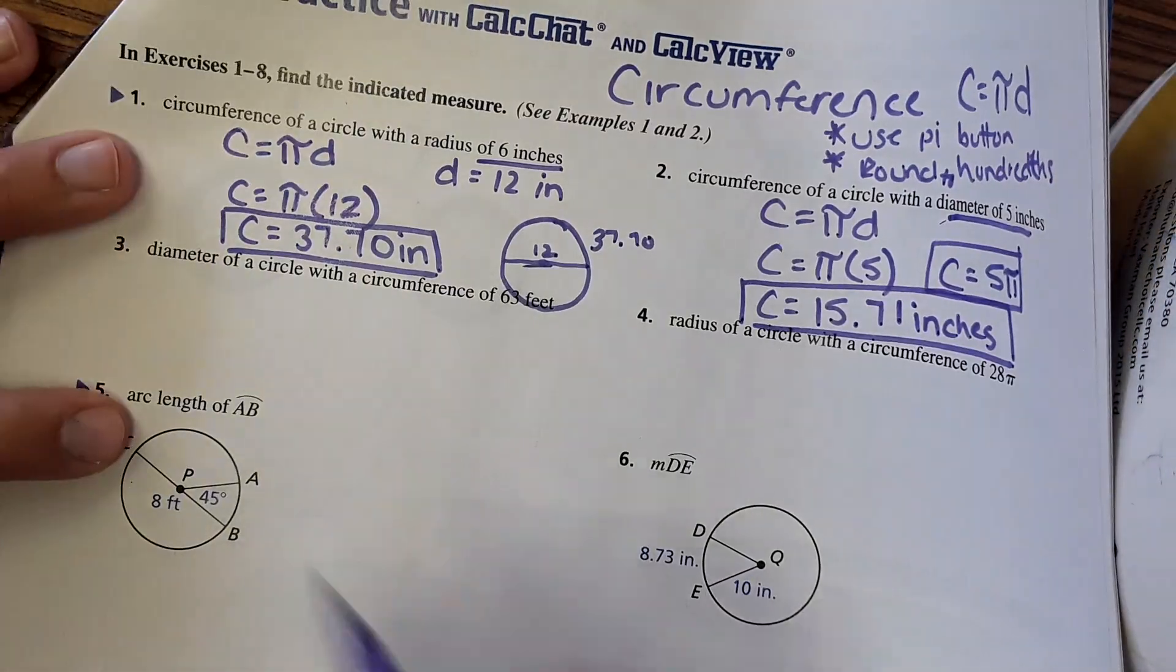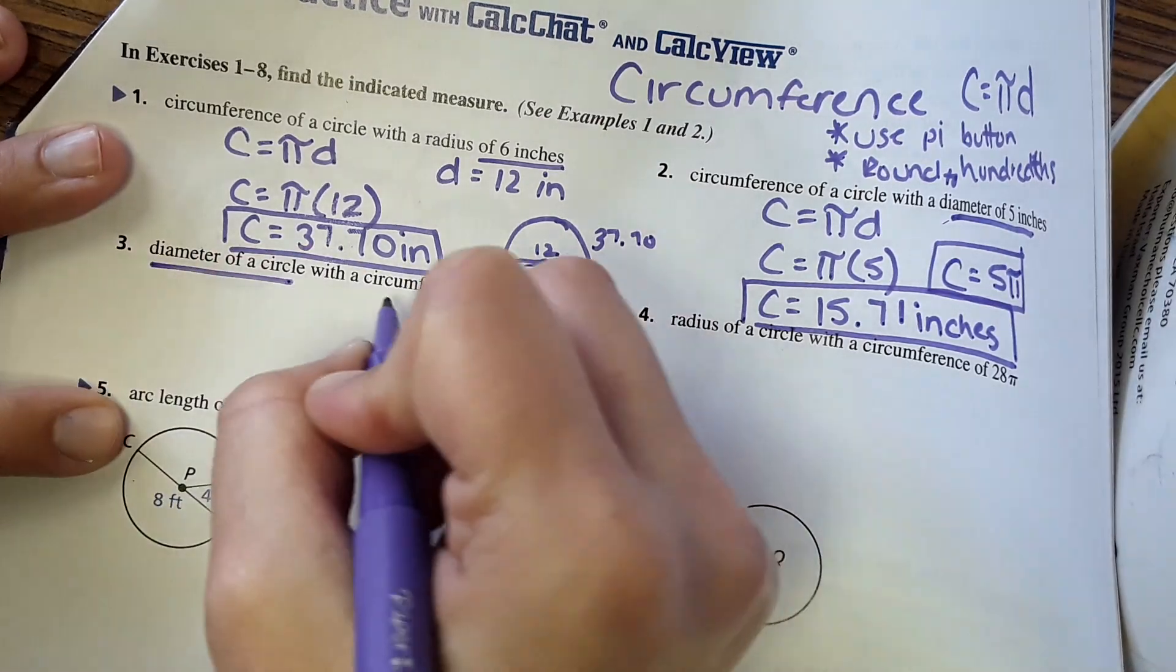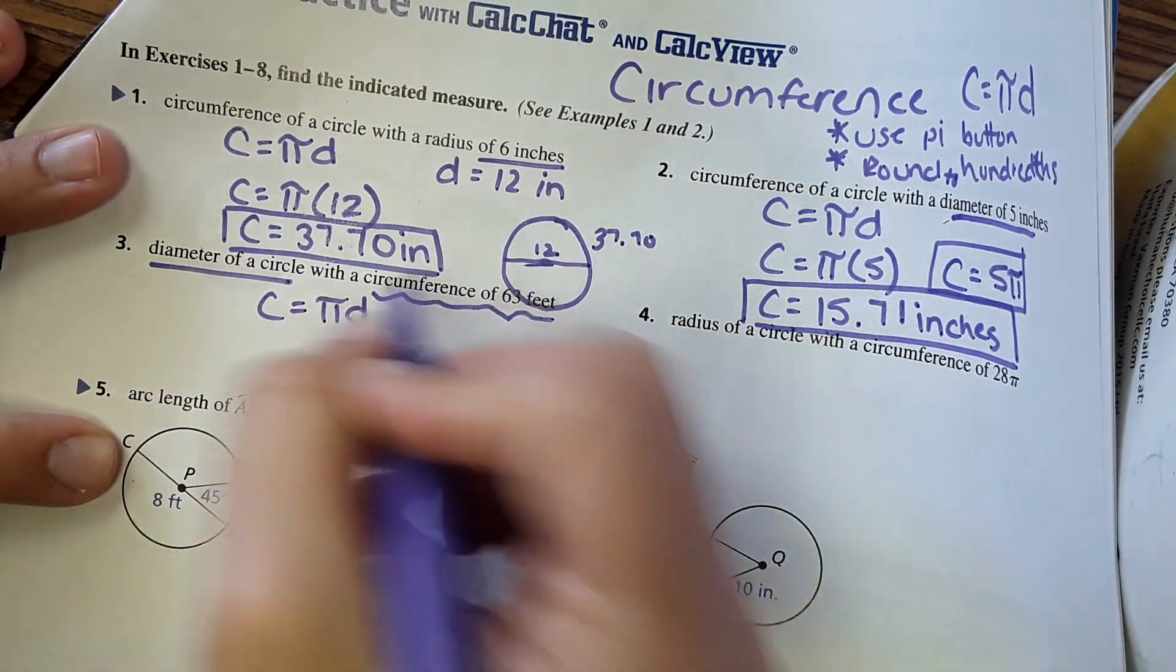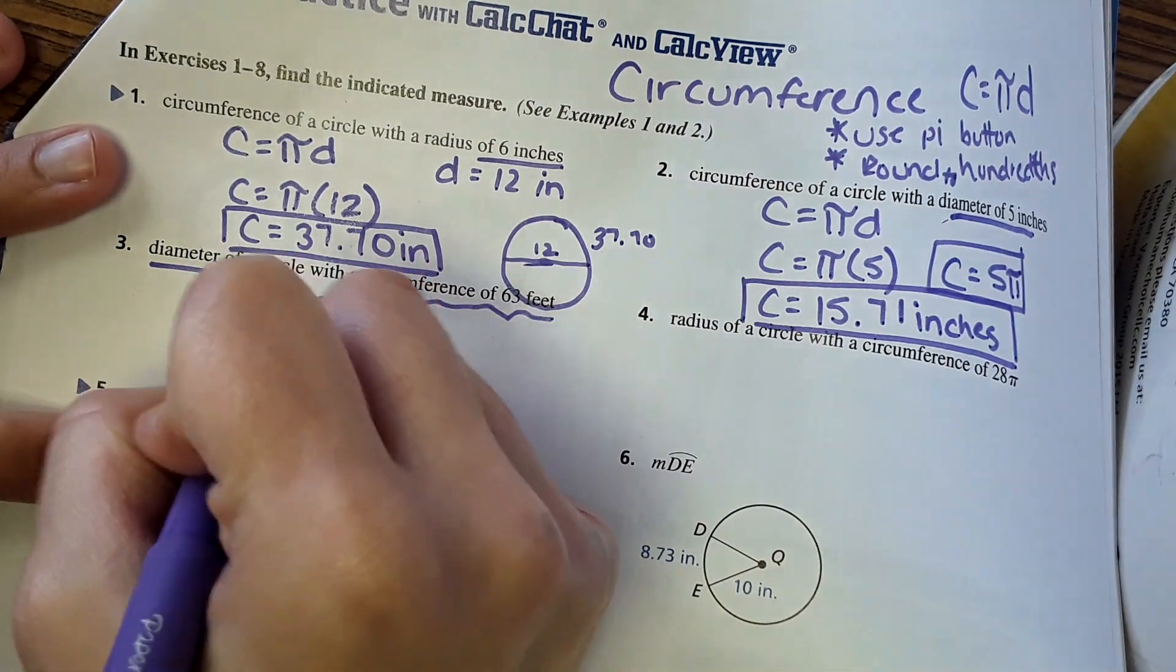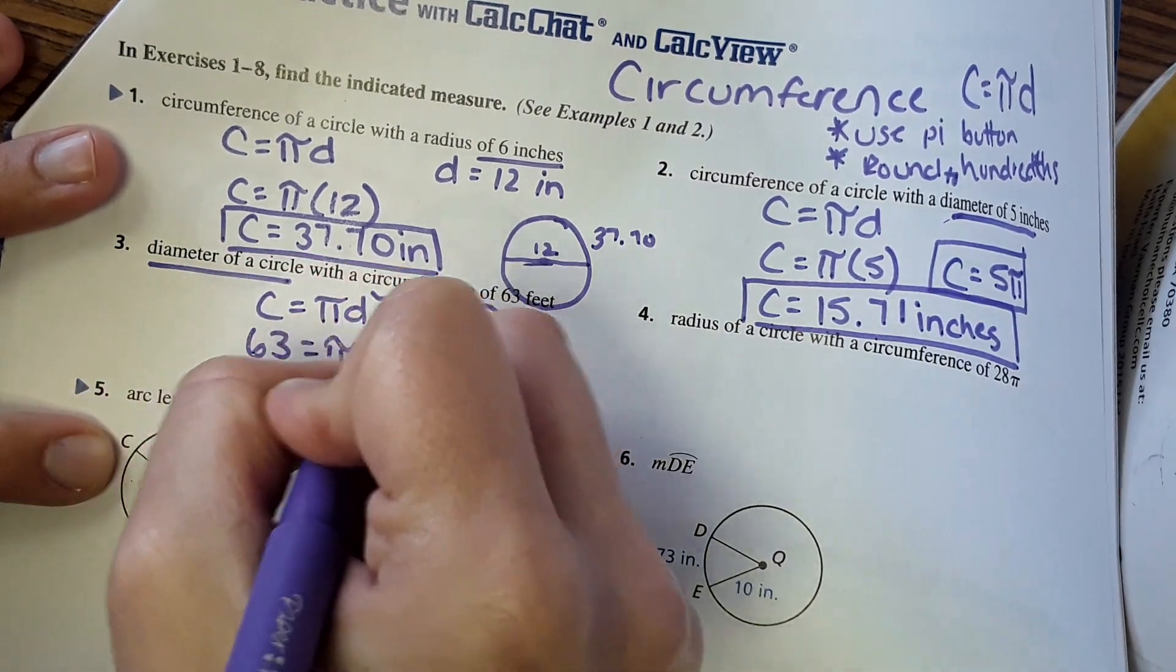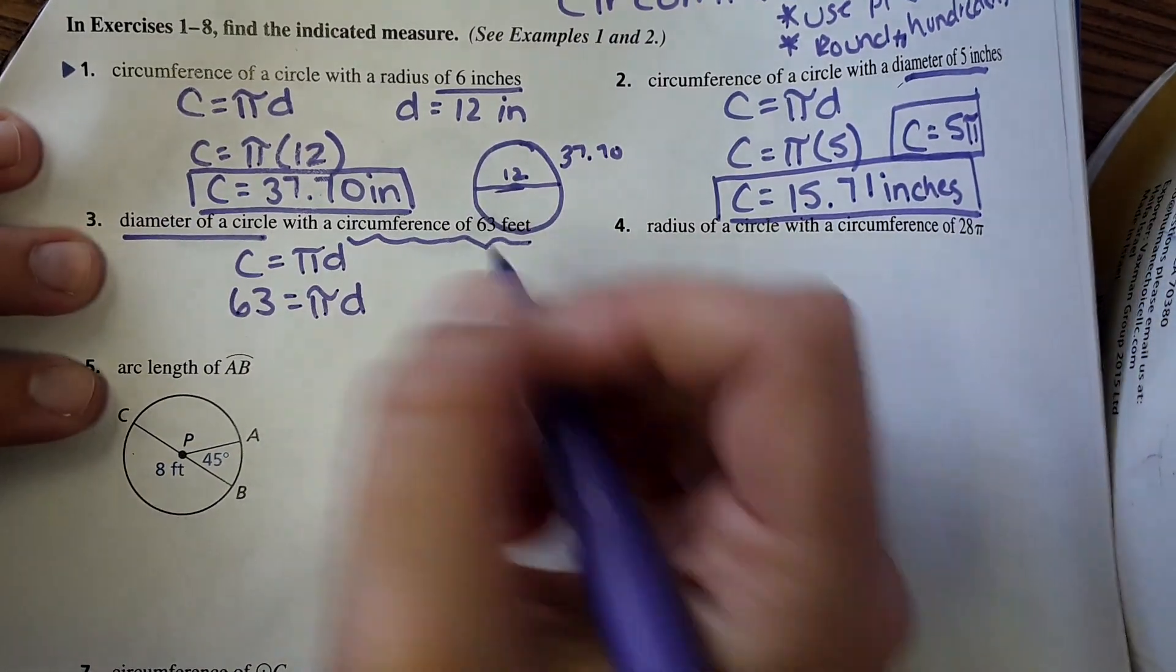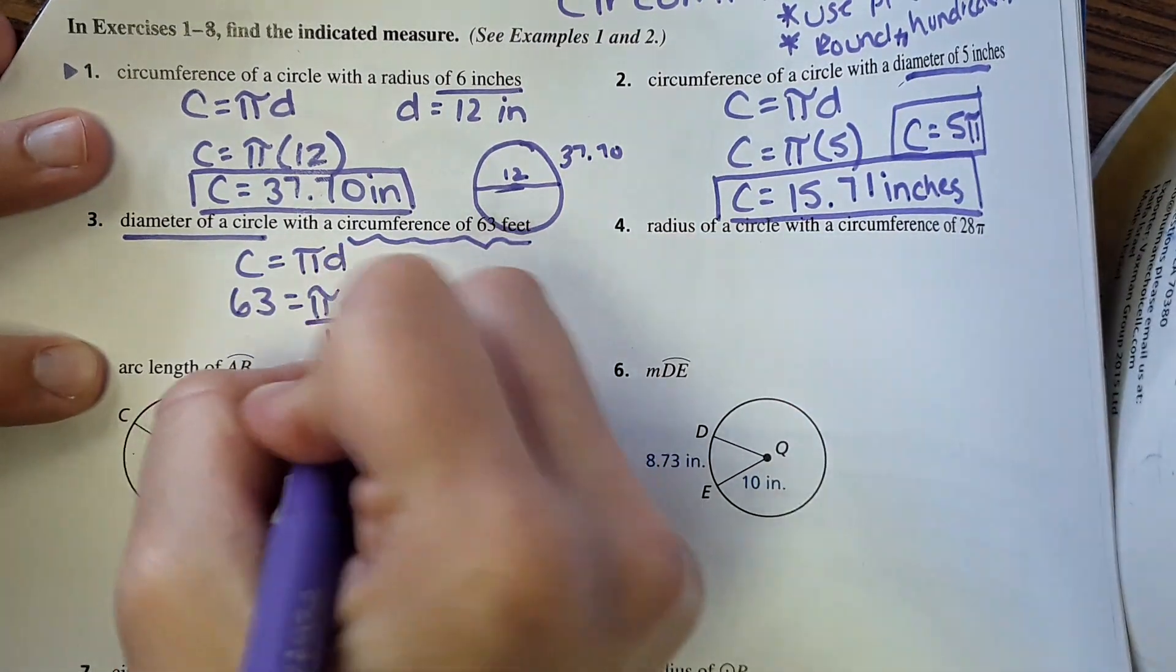Next they're gonna have us work backwards. They want to know the diameter of a circle if they give us the circumference is sixty-three, using the same equation. So circumference is sixty-three equals pi times diameter. And then we can solve for diameter, divide both sides by pi.